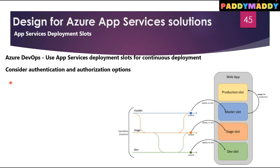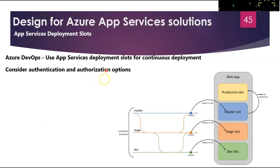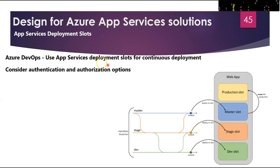Now let's talk about authentication and authorization in terms of security when designing Azure App Service. When you implement a secure solution, authentication is about signing in users, while authorization is about providing access to secure data. Azure App Service provides built-in authentication and authorization capabilities — sometimes referred to as Easy Auth.